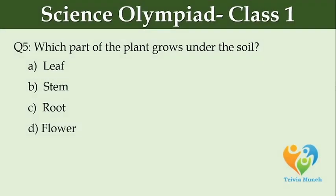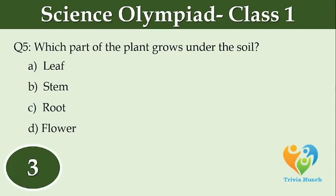Which part of the plant grows under the soil? Option A: Leaf. Option B: Stem. Option C: Root. Option D: Flower.